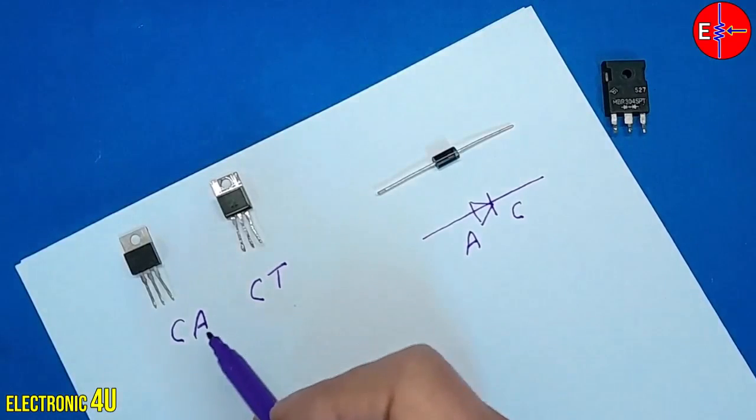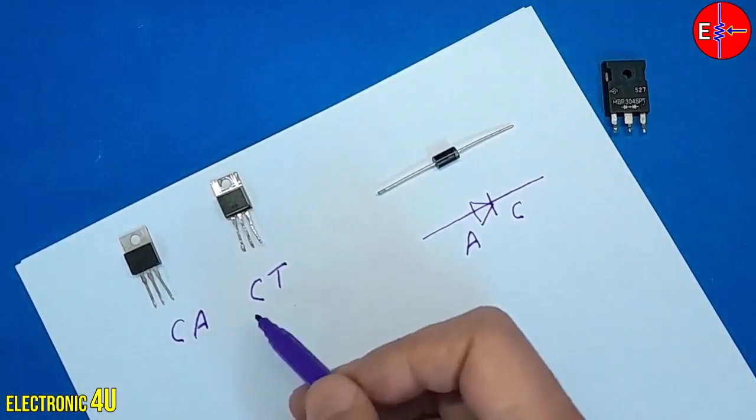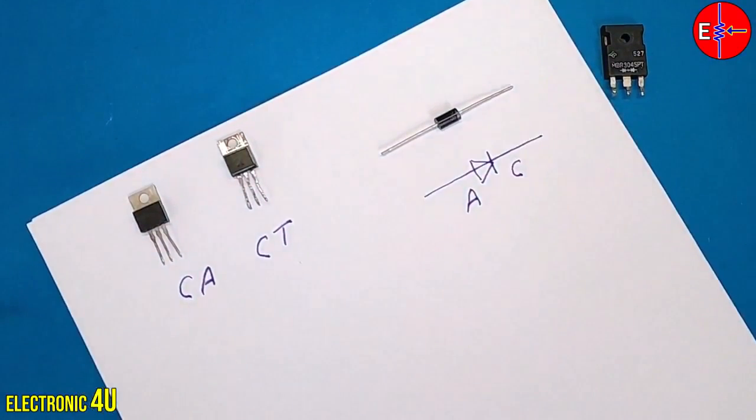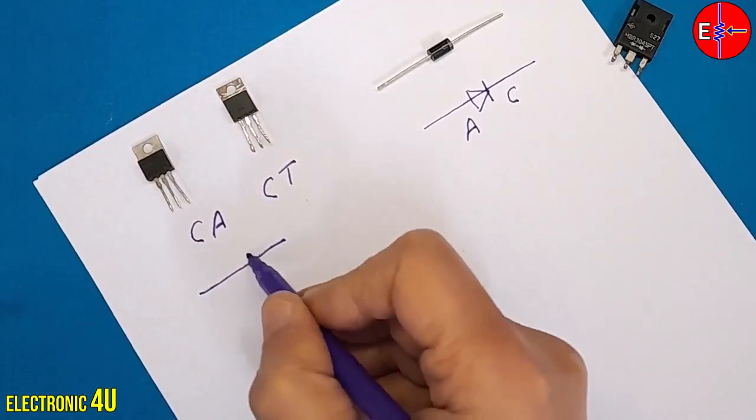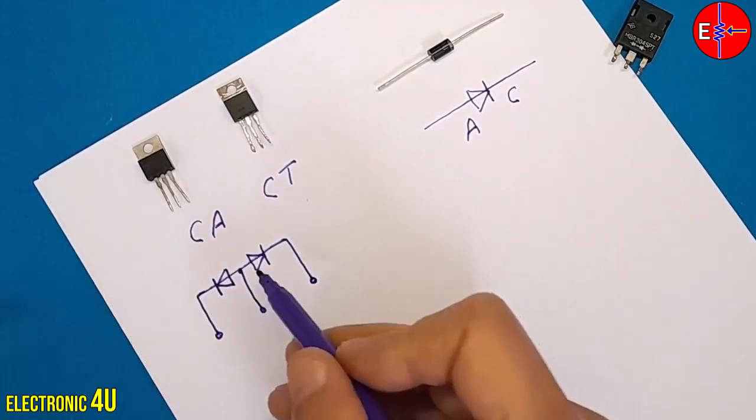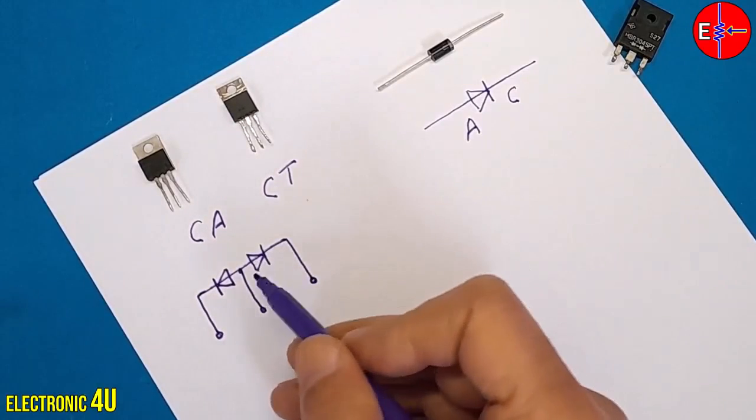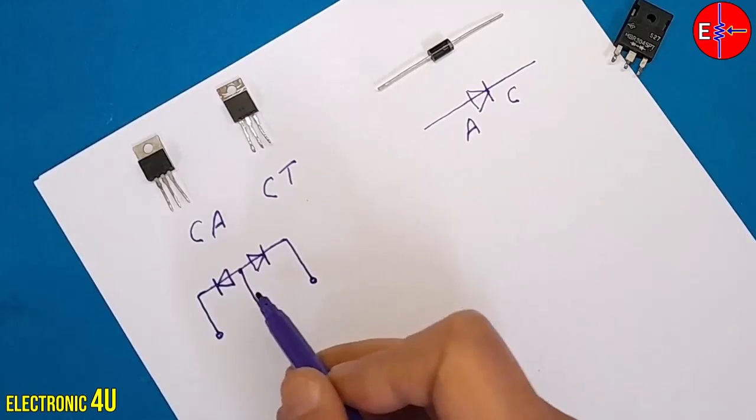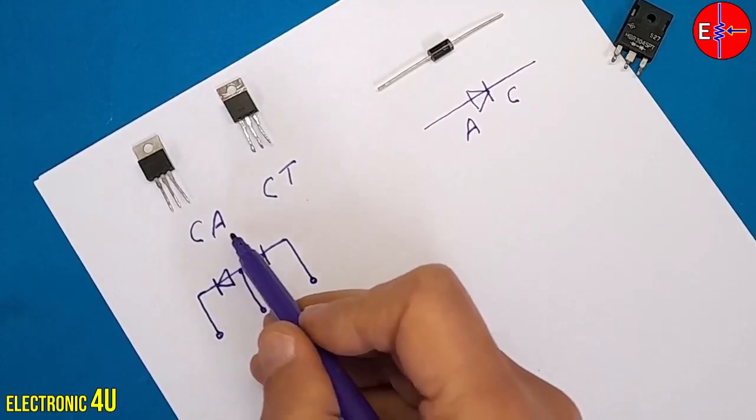If the last two letters CA are written on the diode, its schematic is like this. The direction of the line is opposite to each other. This is a CA diode. It means common anode.